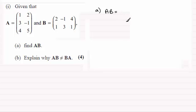First of all, we've got to find A times B. So if we copy the matrices in, we've got 1, 2, 3, -1, 4, and 5, and then we're multiplying this with matrix B which is 2, -1, 4 and 1, 3, 1.